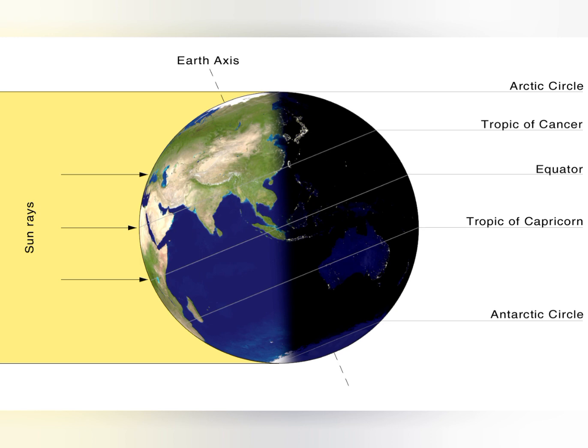The earth's axis is tilted at an angle of 23 and a half degrees, and the shape of the earth is spherical — it is bulging at the equator and tapering at the two poles. Because of these factors, the solar energy received by different regions or parts of the earth is also varying.